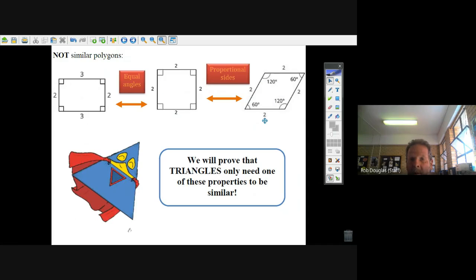But their angles are not equal, so proportional sides doesn't necessarily mean similar polygons.